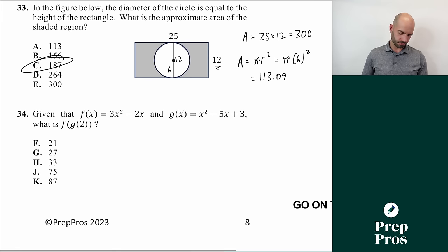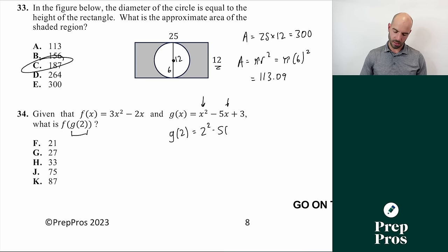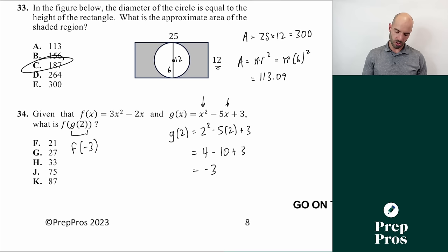Number thirty-four is a composite function question. Find F of G of 2 by working inside out. First, G(2): plug 2 into x² minus 5x plus 3, giving 4 minus 10 plus 3 equals -3. Then find F(-3): plug -3 into 3x² minus 2x, giving 3 times 9 minus 2 times (-3) equals 27 plus 6 equals 33. The answer is H.